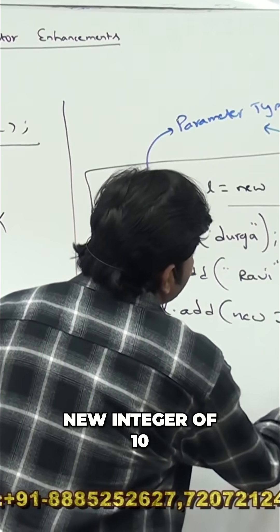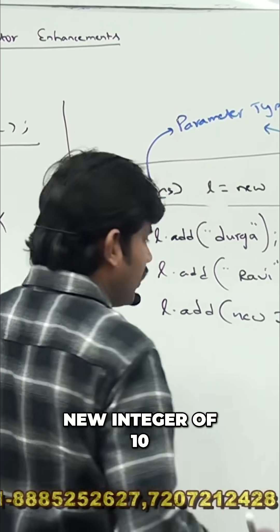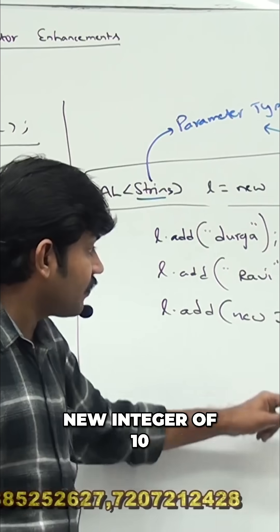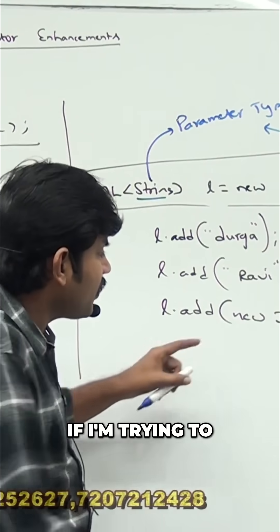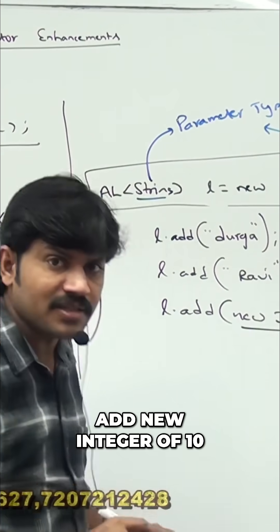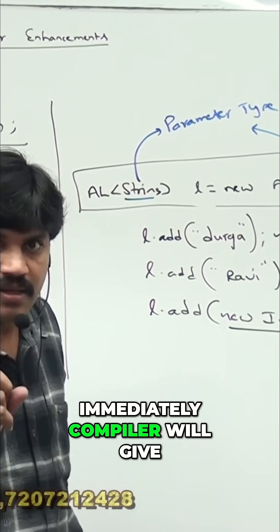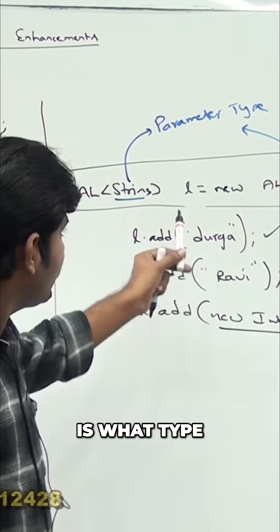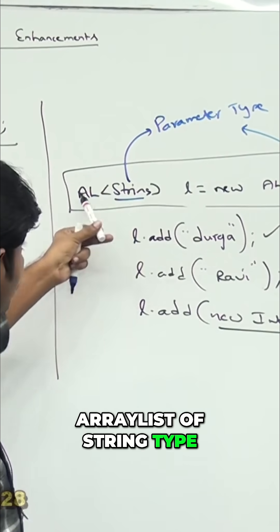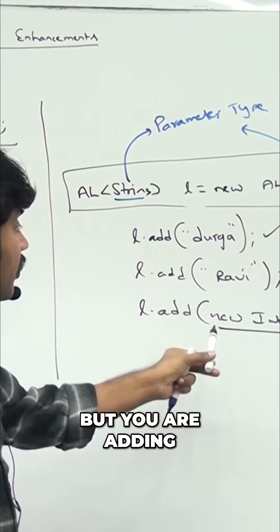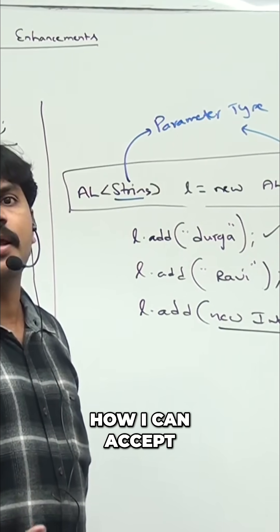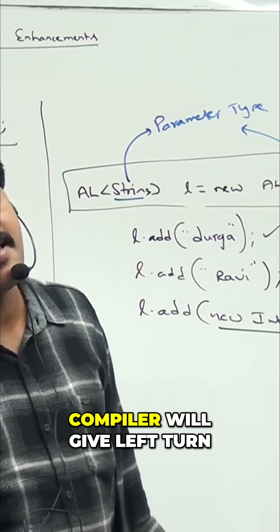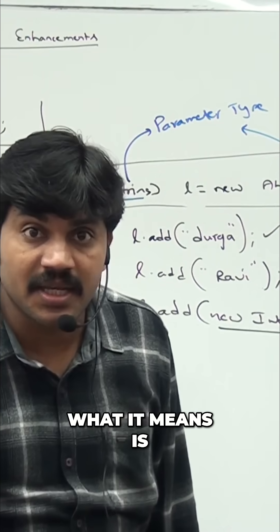New Integer of 10. If I'm trying to add new Integer of 10, immediately compiler will give an error. This l is what type? ArrayList of String type. But you are adding which type of object? Integer type. How can I accept like this? Compiler will give an error.